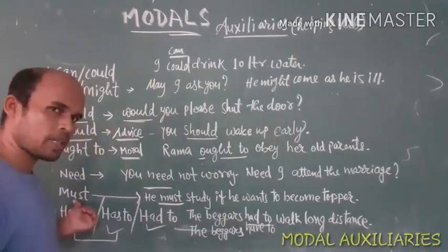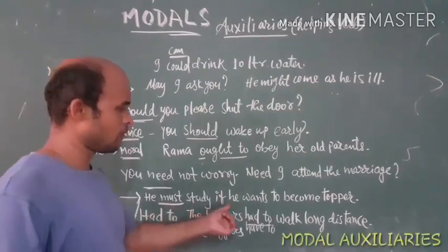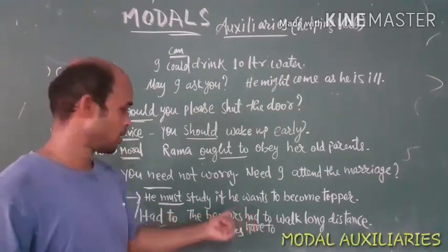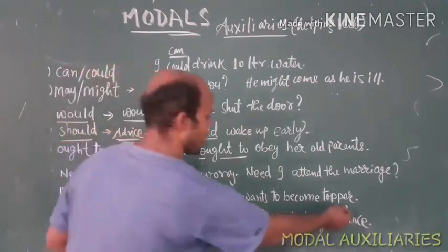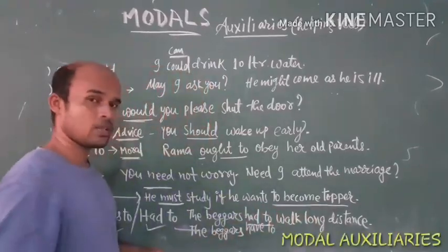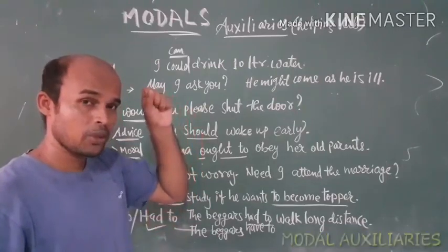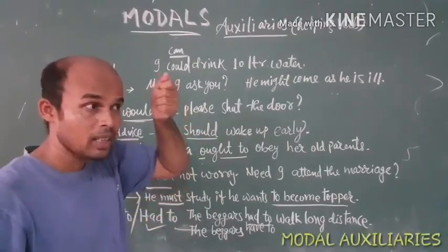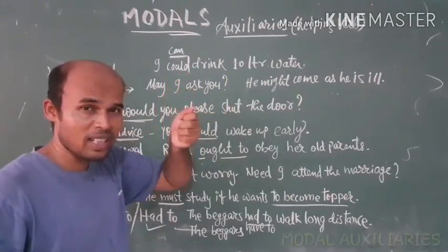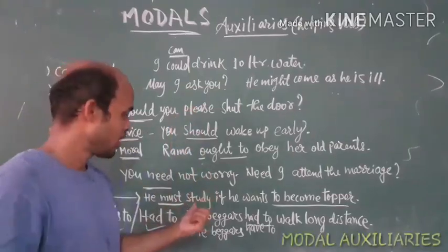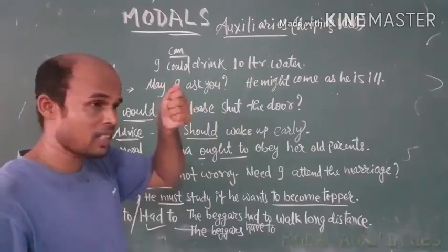Now we come to must, which expresses compulsion. For example: 'He must study if he wants to become a topper.' Here must is a compulsion because the reason is given — if he wants to become the topper, he must study. Another example: 'You must carry an umbrella if you are walking out in the rain.' It is compulsory — otherwise you will get drenched.